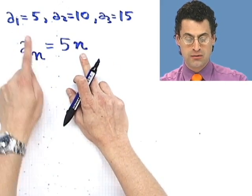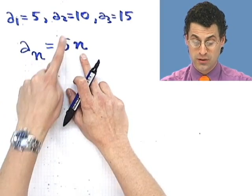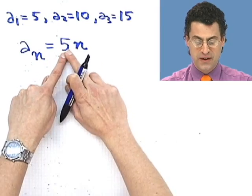And let's check it. If n equals 1, I get 5. If n equals 2, I get 5 times 2, which is 10. If n equals 3, then I have 5 times 3, which is 15.